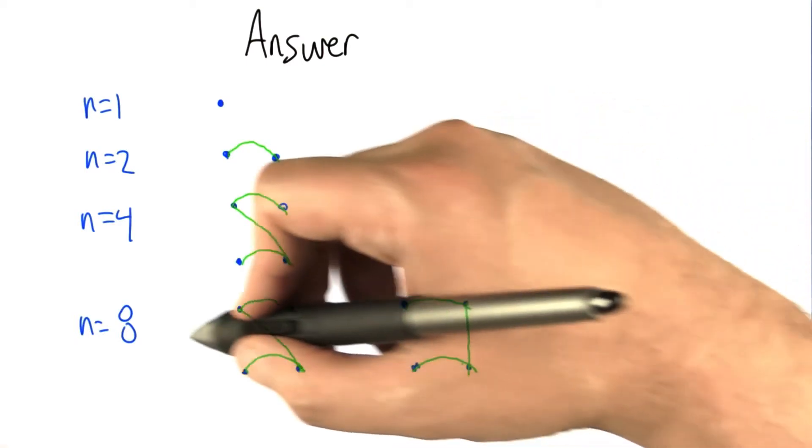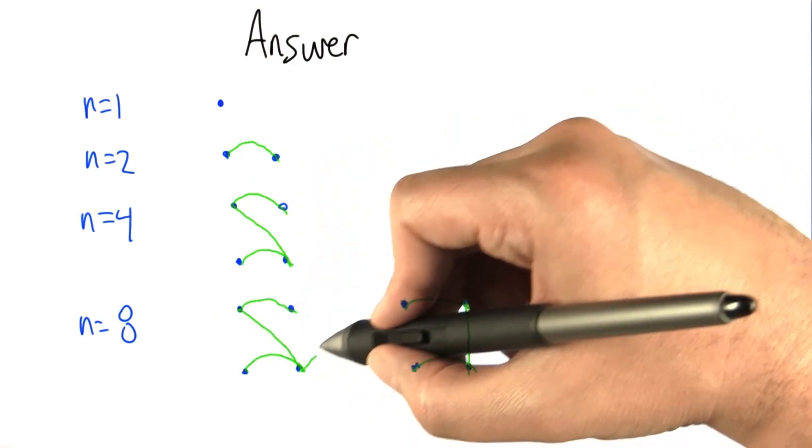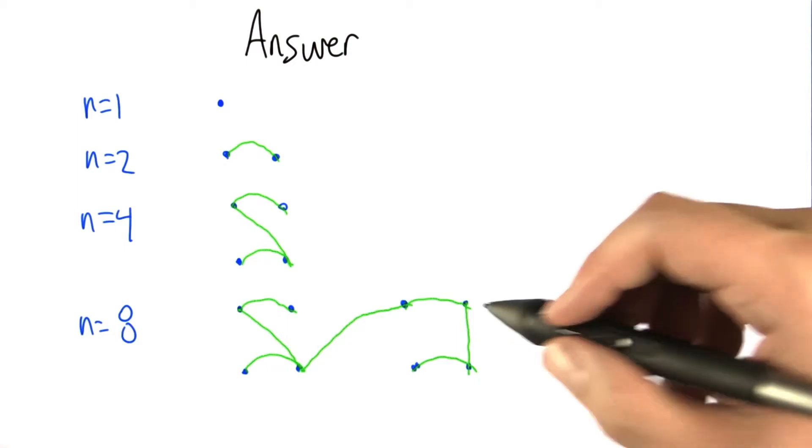Then, we connect randomly the two n equals 4 graphs to get the n equals 8 graph, and maybe that'll be something like this. So in this particular case now, we don't have a chain anymore.